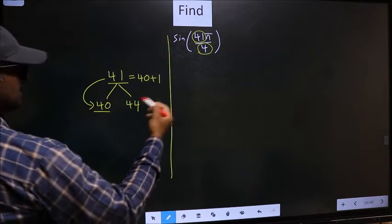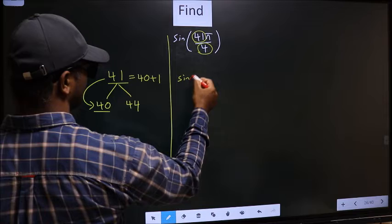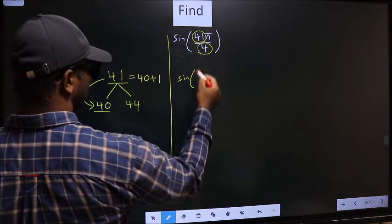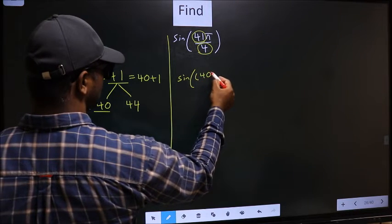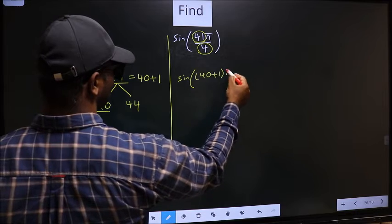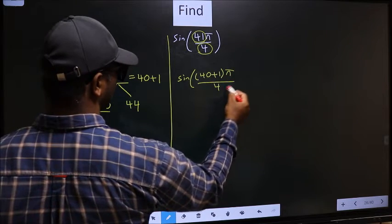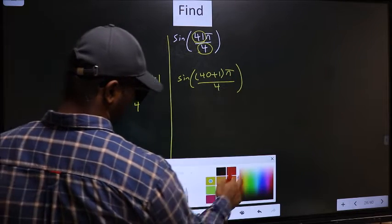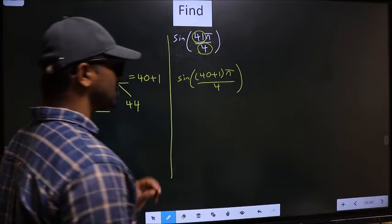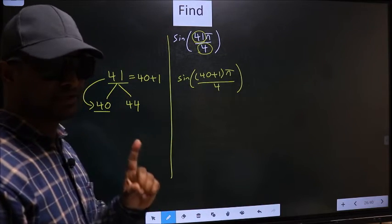So this will change to sin. In place of 41, now I write 40 plus 1, π by 4. This is your step 1.